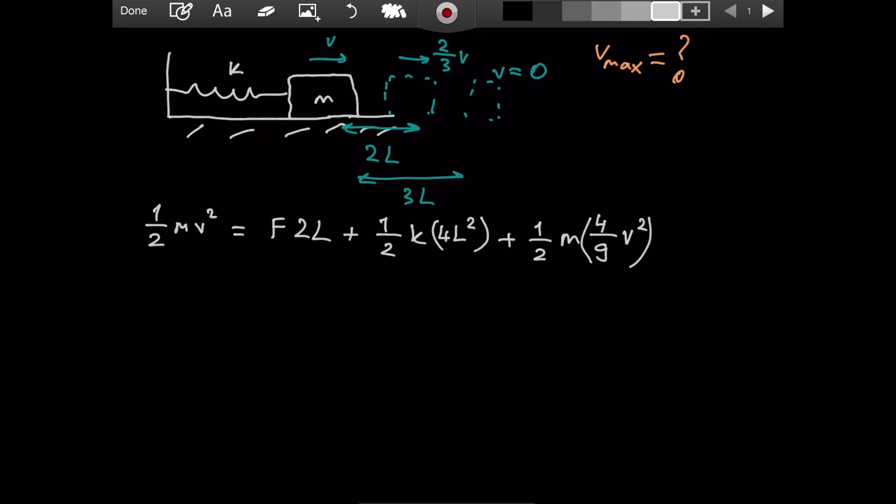Now, the second case. We have 1 over 2mv squared. I'm still using the initial energy. This should equal, now the frictional force has done F times 3L amount of work because the distance that we traveled through is 3L and the force of friction did not change. Plus, there is no kinetic energy. The mass comes to the stop. But there is spring potential energy, which equals 1 over 2k 9L squared. Because I squared 3L. So we have these two. And this is the information that we are already given from the question. We weren't given these formulas, but with the givens, with the knowns, we were able to figure these out using energy conservation.